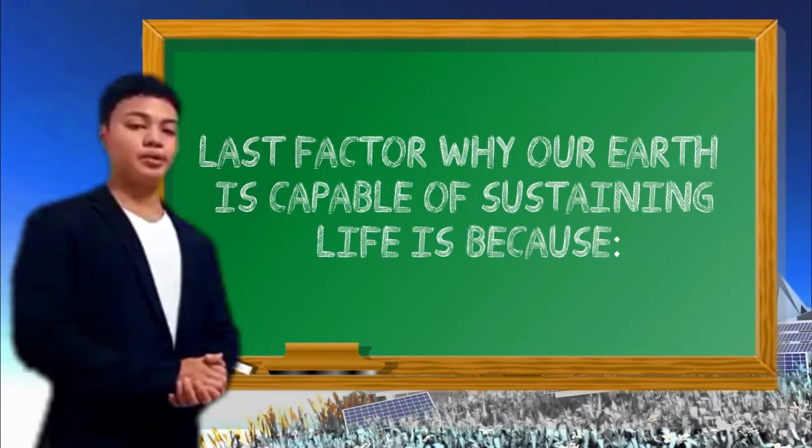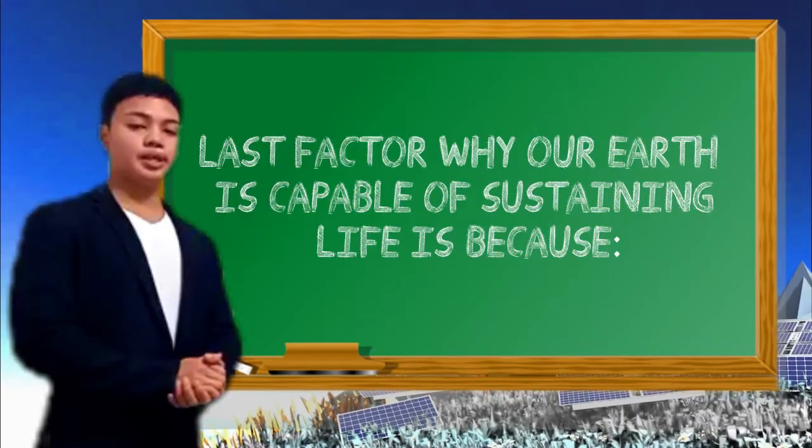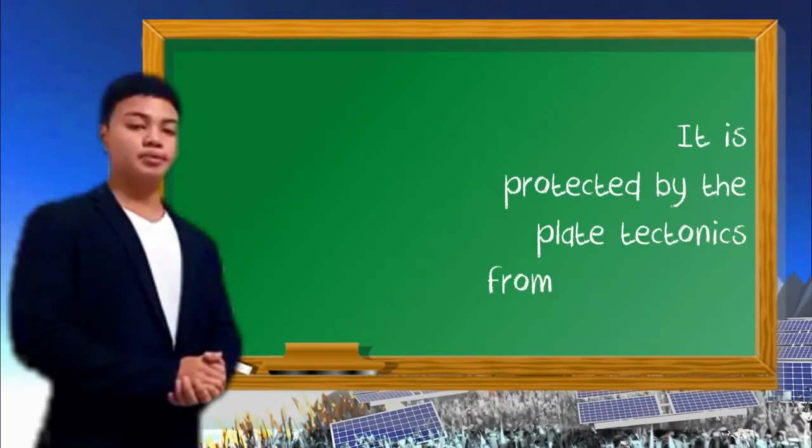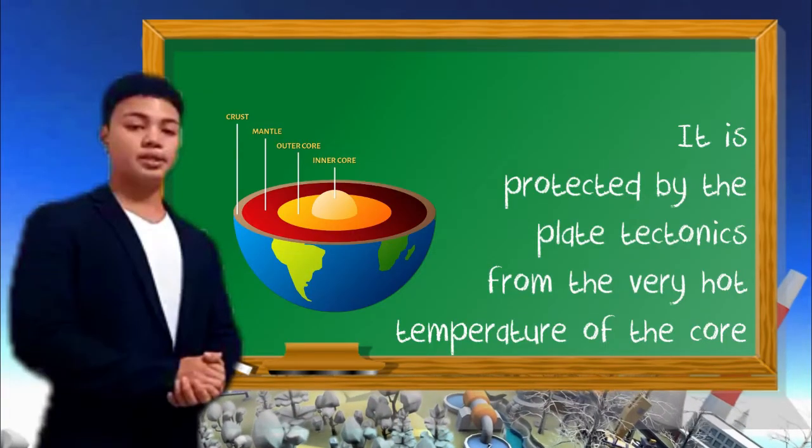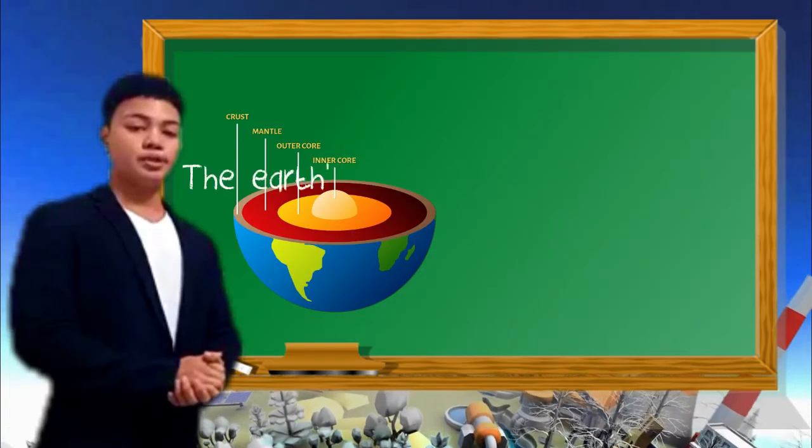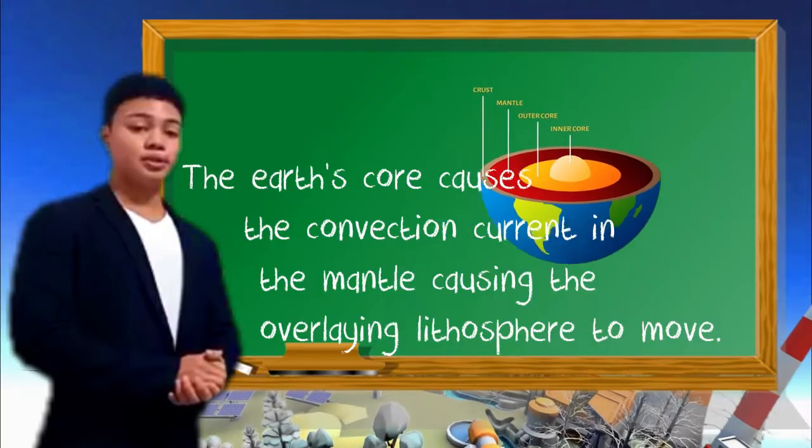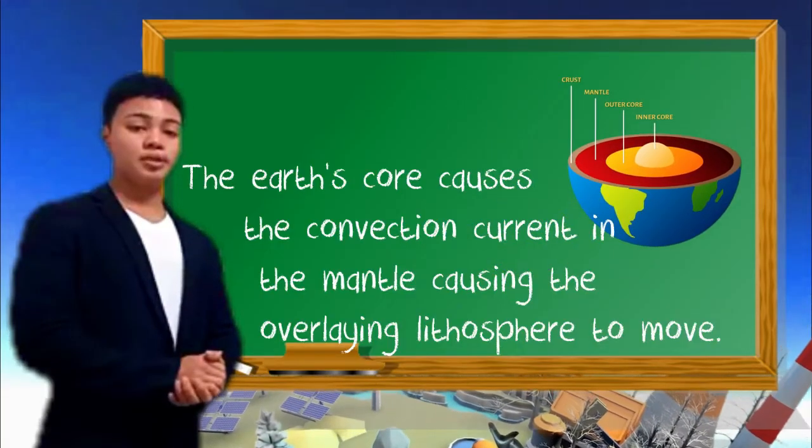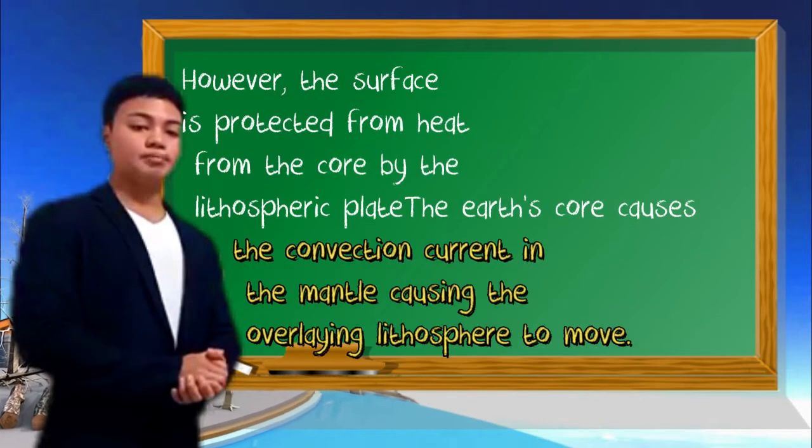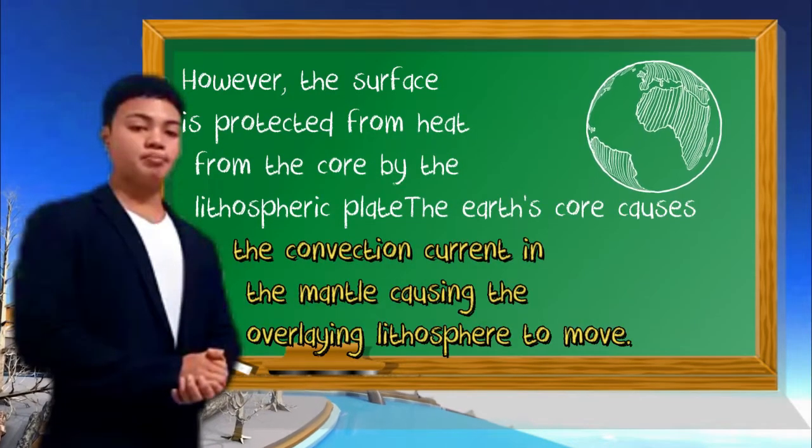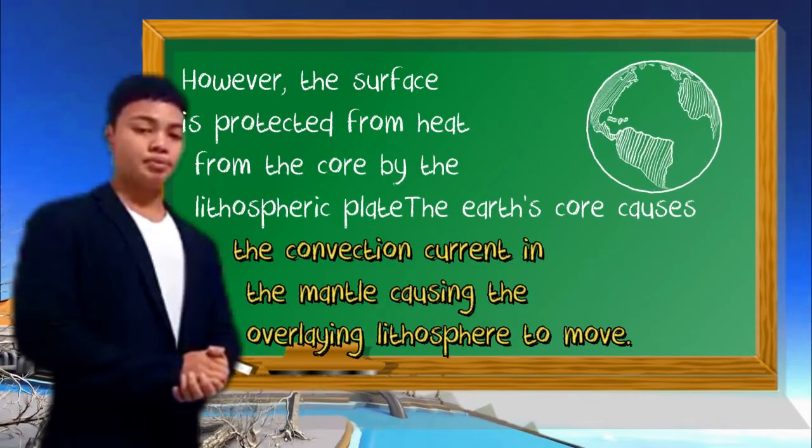The last factor why our Earth is capable of sustaining life is because it is protected by the plate tectonics from the very hot temperature of the Earth's core. The Earth's core causes convection currents in the mantle causing the underlying lithosphere to move. However, the surface is protected from the heat from the core by the lithospheric plates.